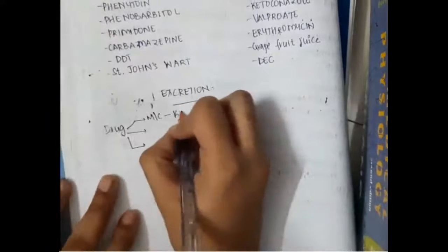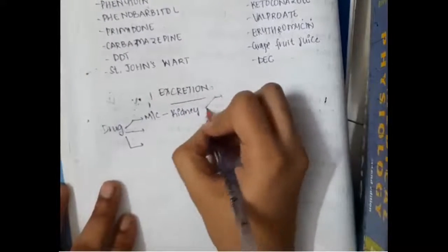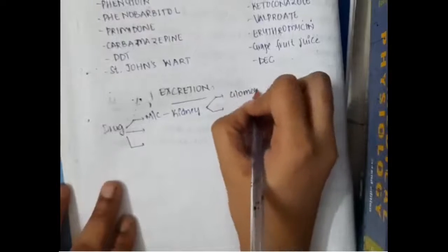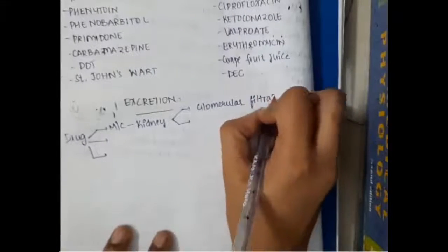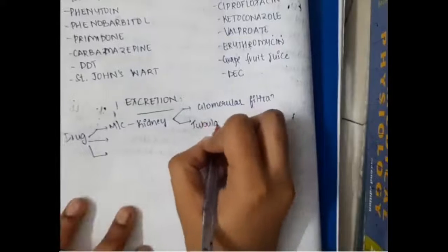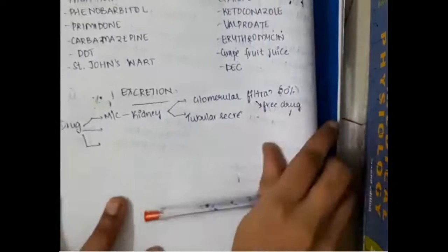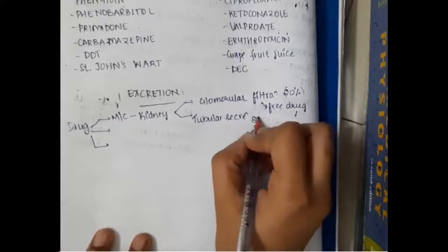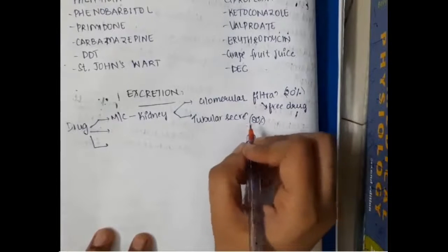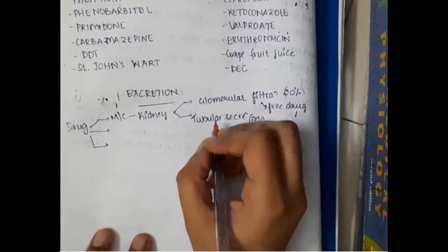Most of the drugs are mainly excreted through three processes. First, most commonly excretion is through the kidney. In the kidney, 20% of the drugs are excreted by glomerular filtration and 80% of the drugs are excreted by tubular secretion. Through glomerular filtration, only the free drugs are excreted, whereas through tubular secretion, both the free drugs and the plasma protein-bound drugs are also excreted.